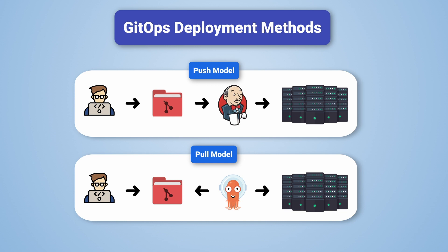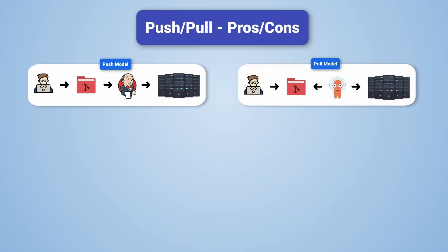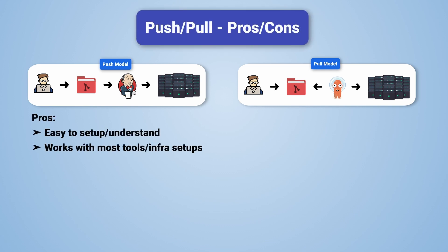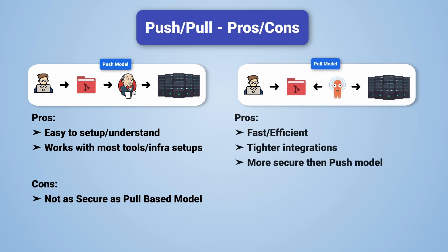Both the push and the pull-based models are effective, but they do have their own pros and cons. The benefits of the push model are its ease to set up and understand, as well as its flexibility to deploy to anything your pipelines can integrate with. However, there are some security concerns, as firewall ports need to be opened and CI servers need to be given permissions to production environments in order to make the changes. The benefits of the pull-based model are that it's fast, efficient, and more secure — there is no need to open your firewall or grant admin access externally. The downside to the pull-based model is that it's basically only available to Kubernetes for the moment.